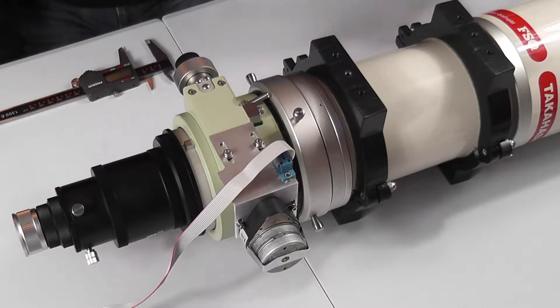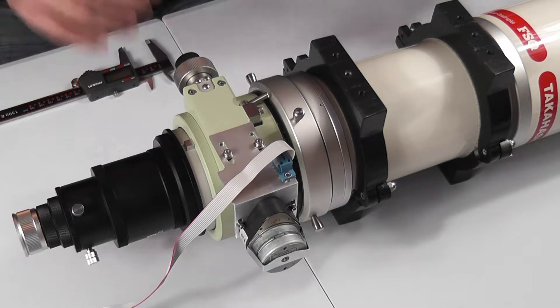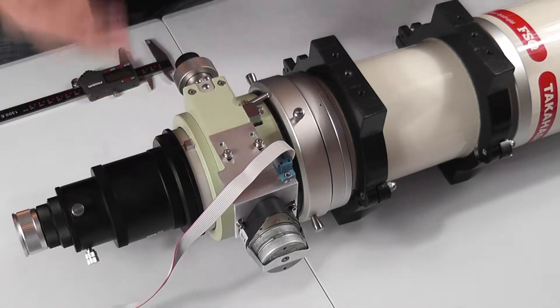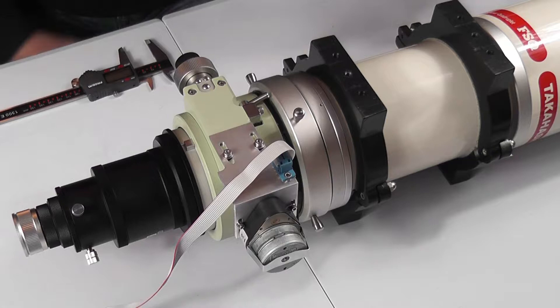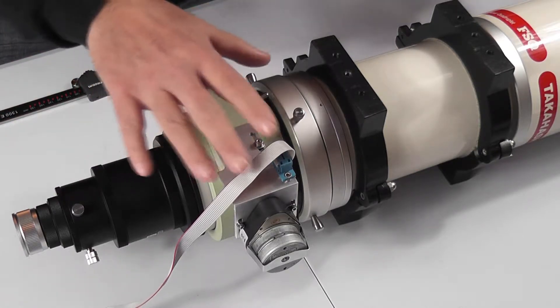Welcome to the next video where we're talking about putting the Lakeside focus motor on a Takahashi FSQ106. The process is exactly the same whichever telescope you're putting it on—it's effectively just the bracket and the fixing that's different, but the whole process and setup is essentially the same. So in the previous video we went through the mechanical installation of the focus control motor.